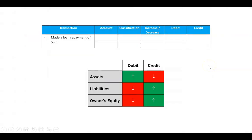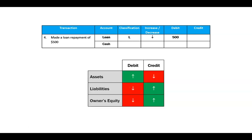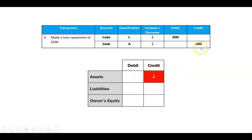Transaction number four: we took out that loan, and now I'm going to pay it back. I've got a loan — that's a liability — and I'm paying back some of that loan, so the amount of that liability is actually going to decrease. The rule says when a liability decreases, that should be a debit. I had to give up some cash to pay the loan; cash is an asset that decreases, and the rule says when an asset decreases, that should be a credit.